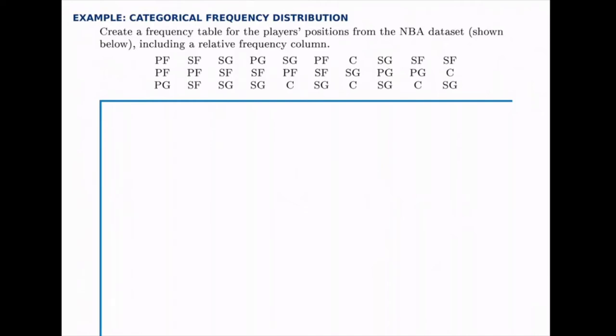In this example, we'll build a frequency table for categorical data. We're given a sample of NBA players with their position, which is a categorical variable. It divides them into categories: point guards, shooting guards, small forwards, power forwards, and centers. And we're going to build a frequency table to go along with this.